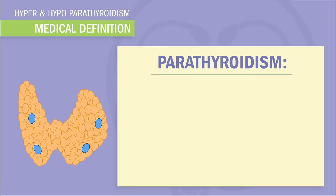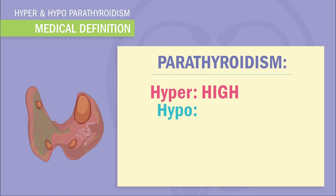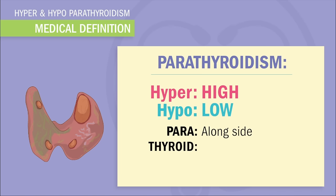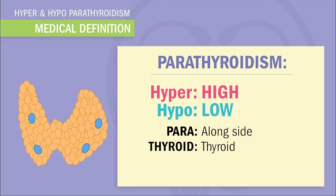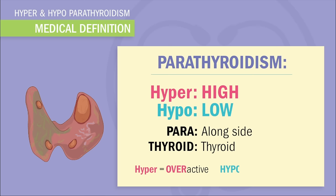Let's break down the terms. Hyper means high and hypo means low. Para means alongside, and then thyroid means thyroid. So hyper anything always means overactive, like a hyper person. And hypo is the exact opposite — underactive, like a super boring person.